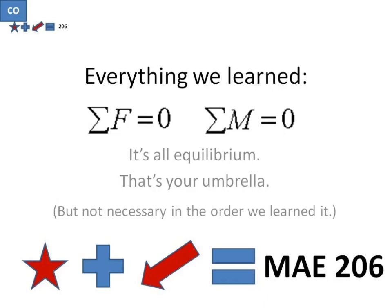Everything we have learned comes back to equilibrium. The sum of the forces equals zero, some of the moments equals zero. That's what we did.